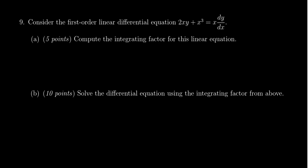I'm going to move the 2xy to the other side of the equation. This rewrites the equation as xy prime — I'll just use y prime to be short for dy/dx — minus 2xy is equal to x cubed.